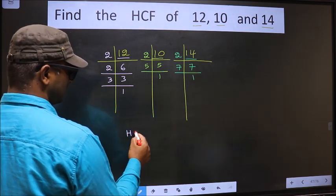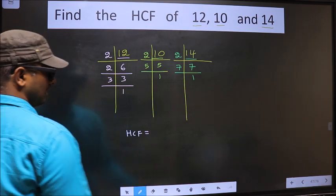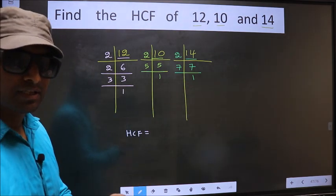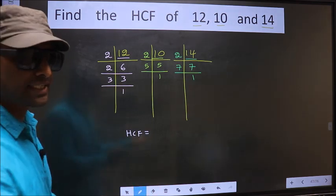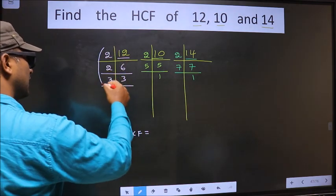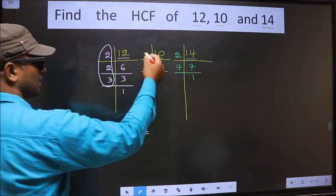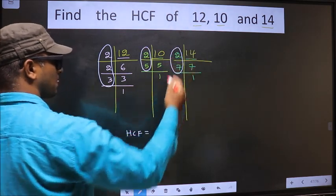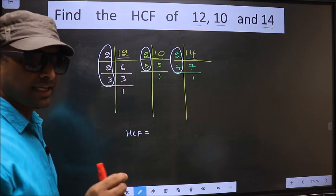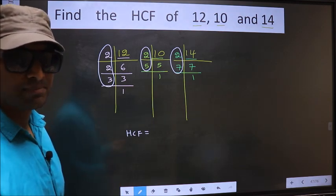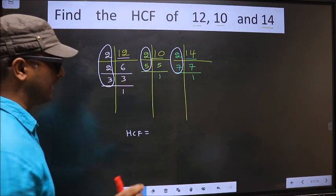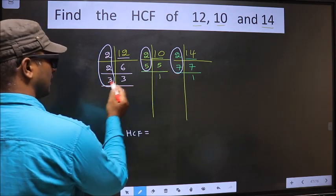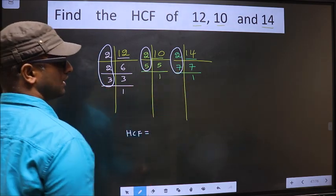Now our HCF is... HCF is the product of numbers which should be present in all three places. I repeat, HCF is the product of numbers which should be present in these 3 places - here, here and also here.